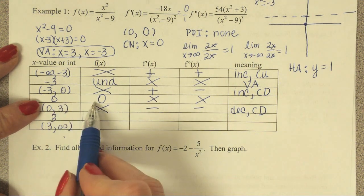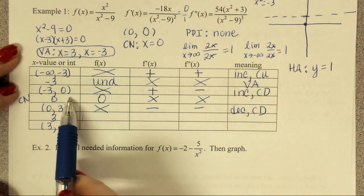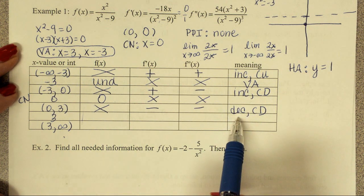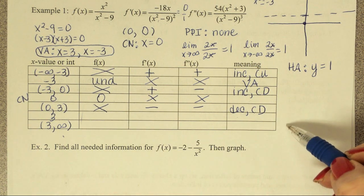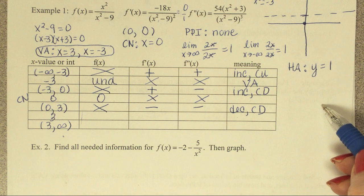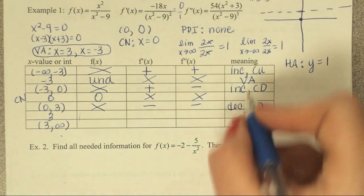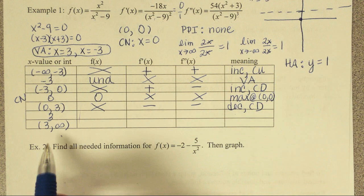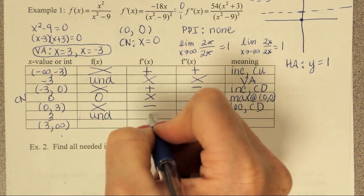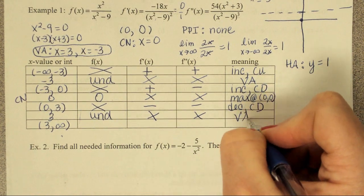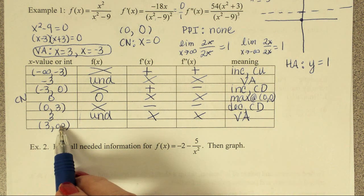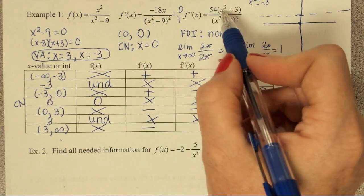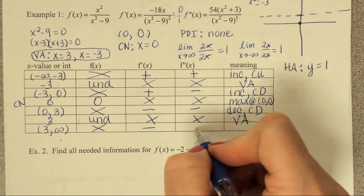Looking back at the critical number zero: we're going from increasing to decreasing, which means we have to have a maximum where it changes. So this is going to be a maximum at (0, 0). At x equals three, we already know it's a vertical asymptote, so we don't waste time on it. In the last region, plugging four back into the original gives negative over positive — negative. Plugging four into the second derivative gives positive, so this region is decreasing and concave up.